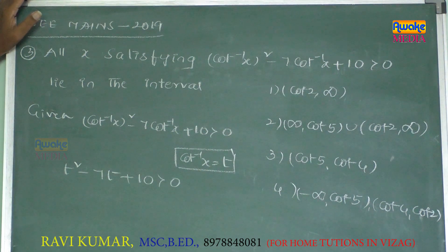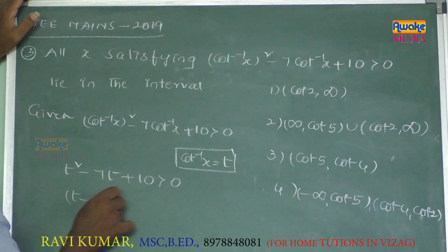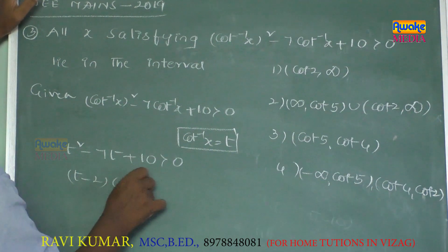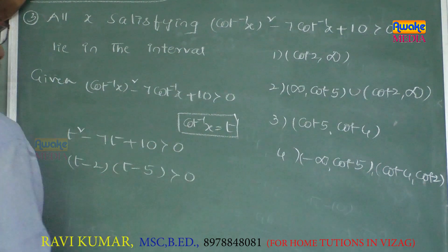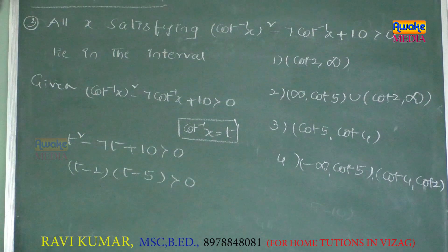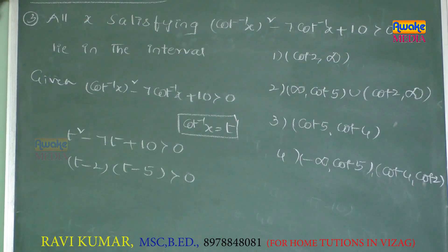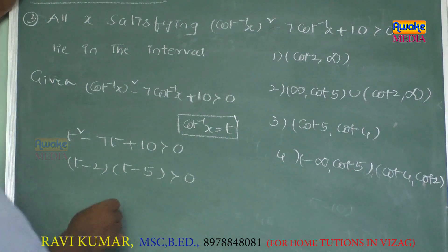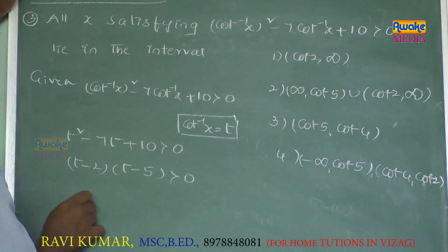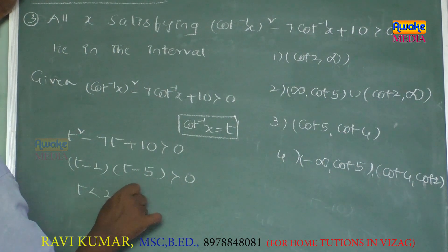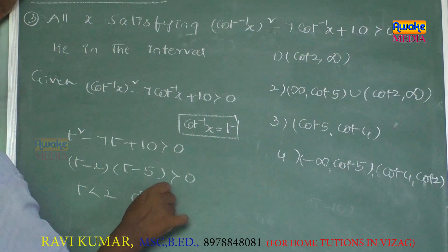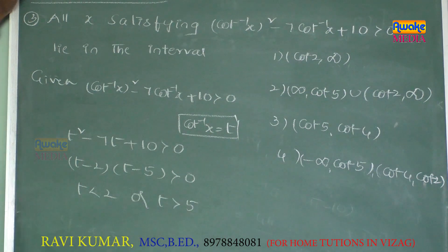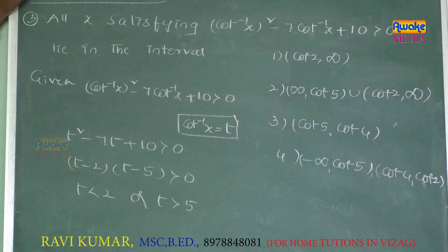Factoring the inequality: (t - 2)(t - 5) > 0. Using the rule that x(x - α)(x - β) > 0 means x does not lie between α and β, we get t < 2 or t > 5. Here t means cot⁻¹(x).